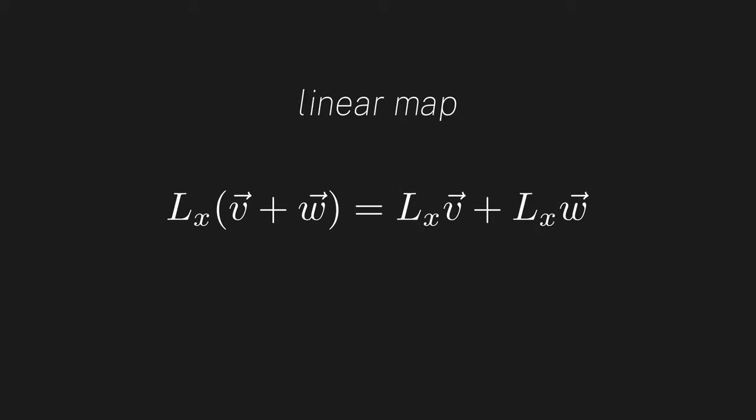So this vector has a component of 3 along the x direction, so this map would return 3. This vector has a component of negative 1 along the x direction, so this map would return negative 1. You can check that this indeed is a linear map. In other words, it satisfies the following properties.